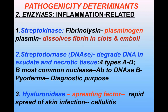Streptodornase, also known as DNase, has been identified in four types: A, B, C, and D. They degrade DNA present in exudates and necrotic tissue. The most important is DNase B, which develops after skin infections or pyoderma and can be used for diagnostic purposes in the laboratory.